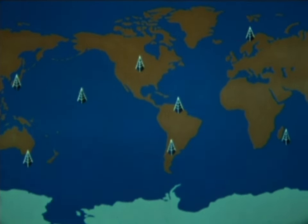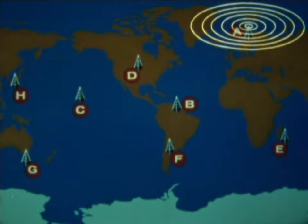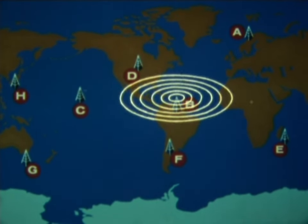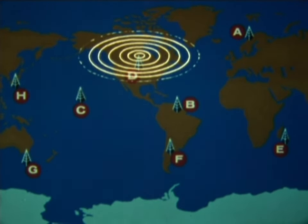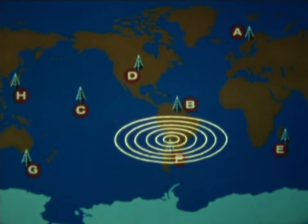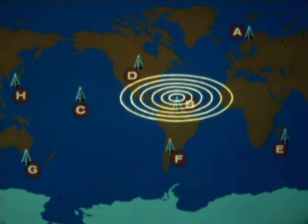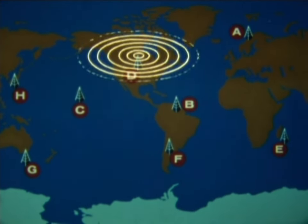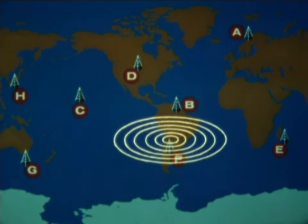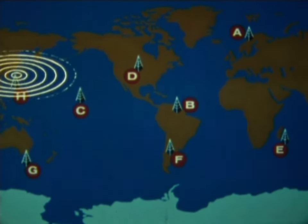Each of the stations is assigned a letter designation, A through H, and each transmits continuous-wave VLF signals in the 10 to 14 kilohertz band. The signal format is transmitted once every 10 seconds, with each station transmitting in turn for approximately one second, and with all transmissions synchronized to a common standard time.